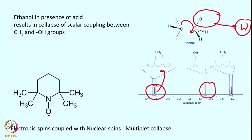Another phenomenon causing collapse of multiplicity is the presence of an unpaired electron near the nuclear spin. For example, in the TEMPO radical, the free electron causes fast relaxation of nearby protons, so they do not see the J coupling, resulting in collapse of the multiplet structure due to the fast dynamics of the electron-proton coupling.